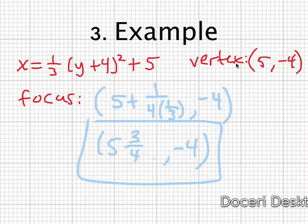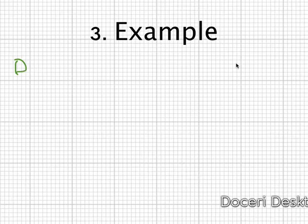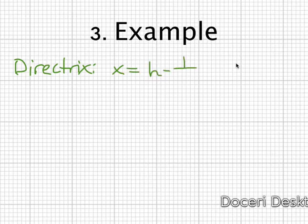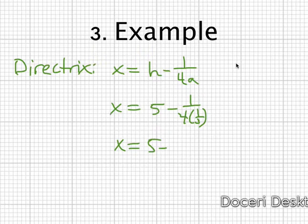Then we have the directrix. That's x equal to h minus 1 over 4a. So this is going to be x equal to 5 minus 1 over 4 times 1 third. So x equals 5 minus 3 fourths, which is the same as 4 and 1 fourth. So the directrix equation is x equal to 4 and 1 fourth.